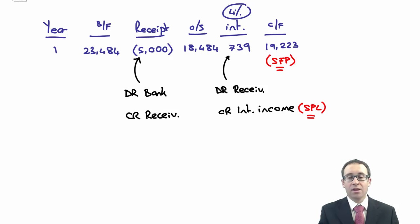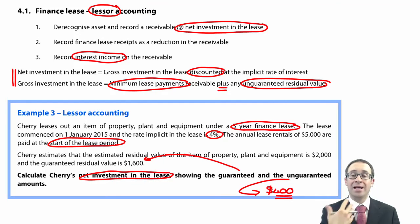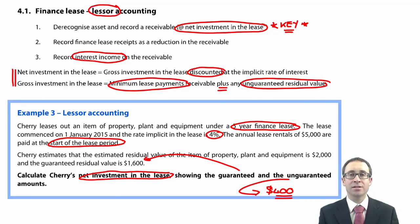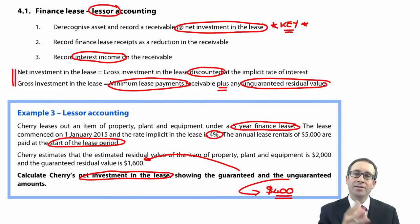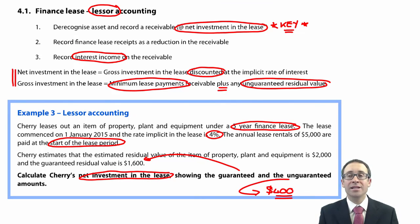For the journal entries: you debit the bank and credit your receivable for the cash receipt. For interest, you debit the receivable and credit interest income on the statement of profit or loss. The carry-forward figure sits on the statement of financial position. The key point is that first step — recording the receivable at the net investment in the lease, which takes the gross investment (minimum lease payments plus unguaranteed residual value) discounted to present value at the rate implicit in the lease. If you can do that, you won't go far wrong in any exam question. That's leases done — next we'll look at sale and leaseback transactions.